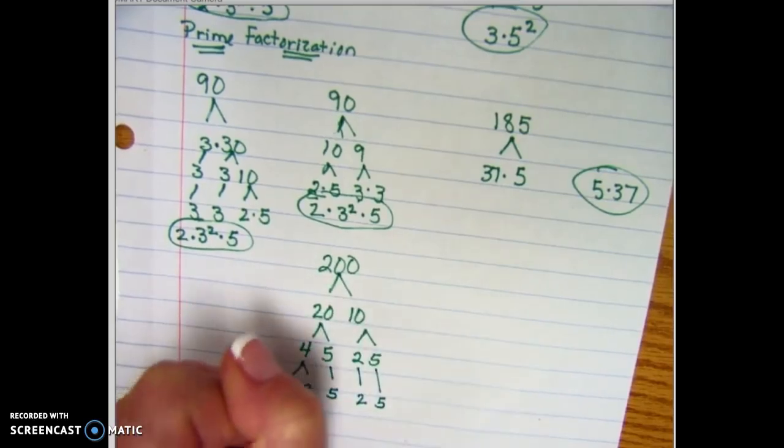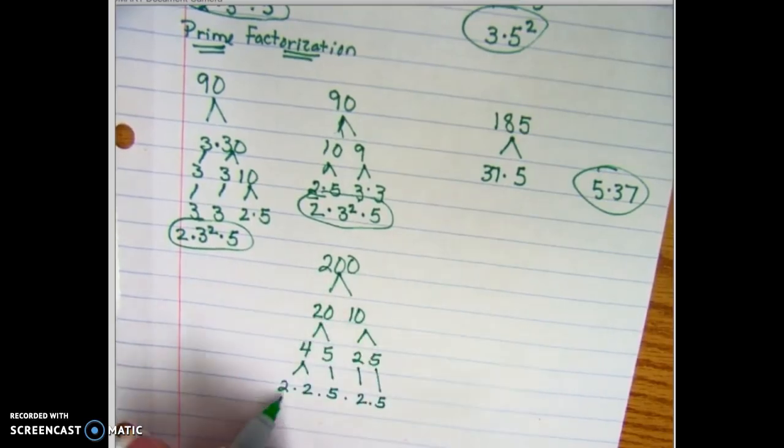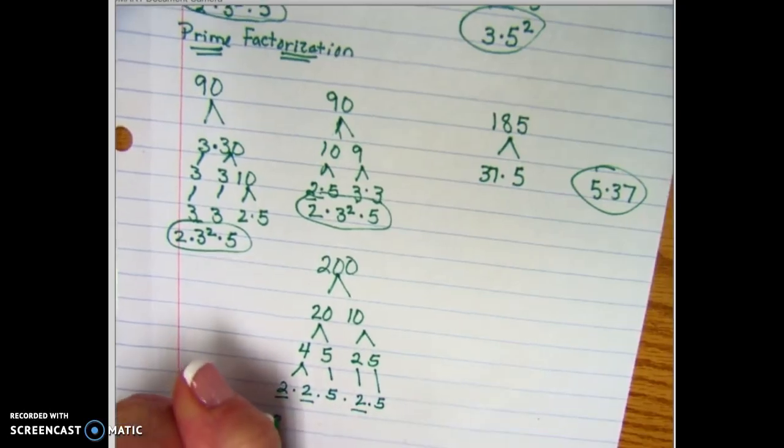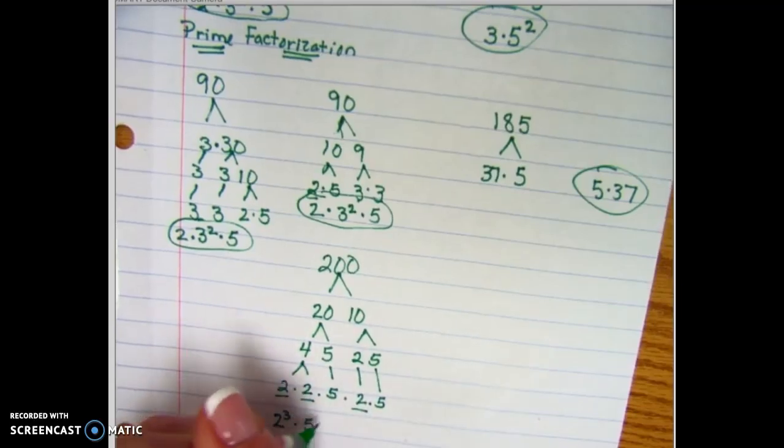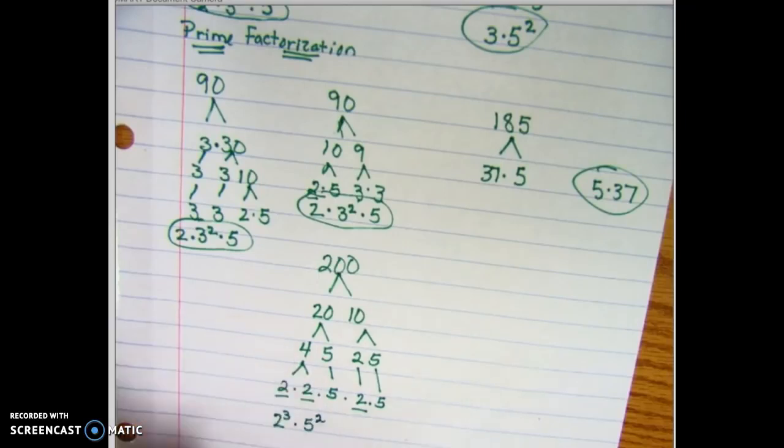So let's look and see, in order, what our numbers are. I see three 2's, so we're going to do 2 to the third power. Do we have any 3's? No, we do not. And then we are going to have 5 to the second power. So if we were to do this, it would actually be 8 times 25, which would get us back up to that 200.